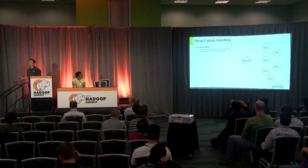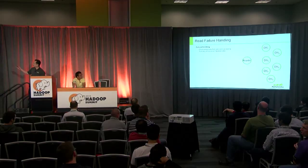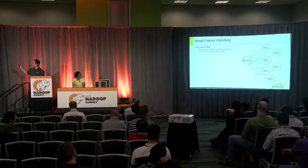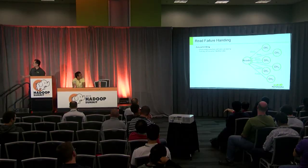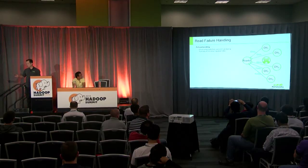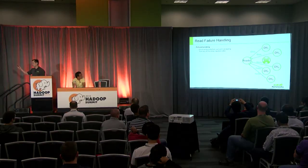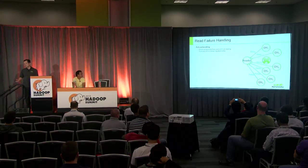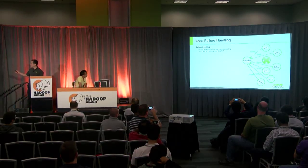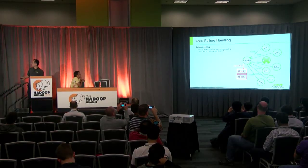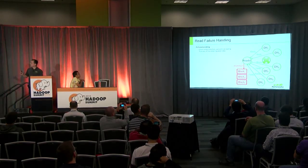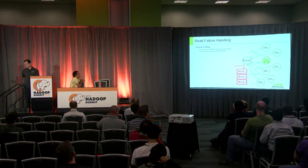For failure handling during read: suppose we're reading blocks one, three, five, six and parity blocks one and two, and data node five fails so block five becomes unavailable. The reader finds the remaining parity block, reads it, and now needs to reconstruct three blocks — blocks two, four, and five — using the decoding algorithm.